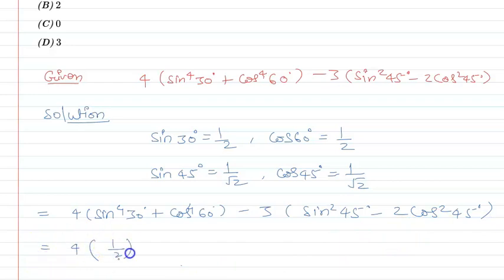So it becomes 4 times (1/2) to the power 4, plus (1/2) to the power 4, minus 3 times (1/√2) squared, minus 2 times (1/√2) squared.